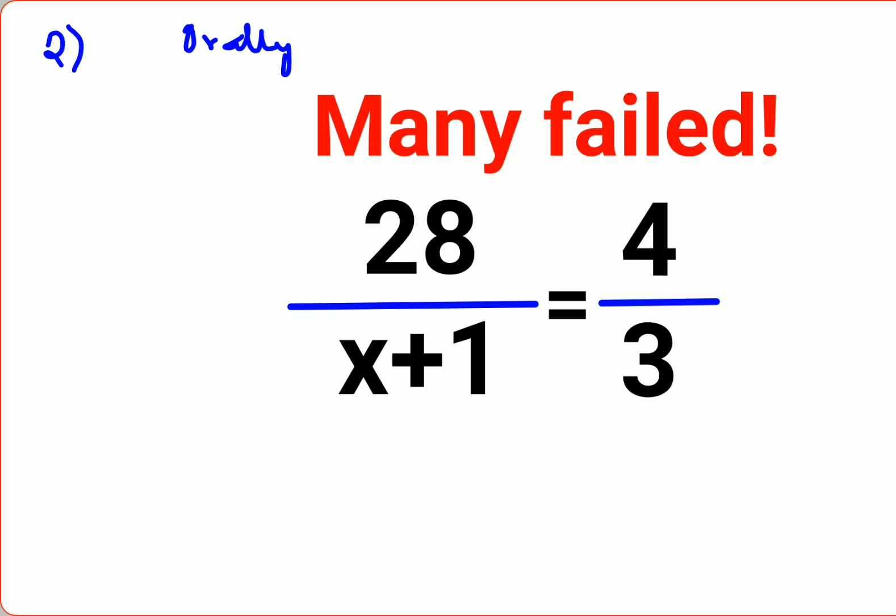Okay, so first method is to shift everything on one side or rather to cross multiplication, means you get your 3 gets multiplied to 28 and 4 gets multiplied to x plus 1. And then what you have over here is 84 equals to 4 into x plus 1.